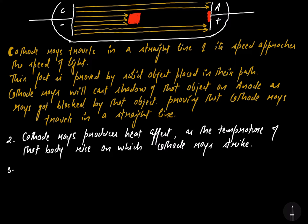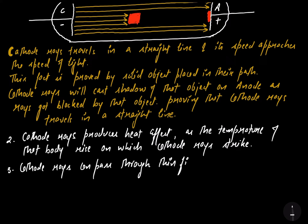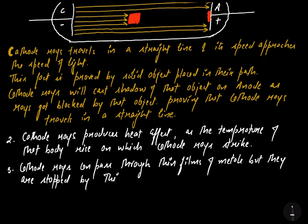The third characteristic: cathode rays can pass through thin films of metal, but they are stopped by thicker foils. So thin metal films are penetrable by cathode rays, while heavier or thicker metal foils will block them.